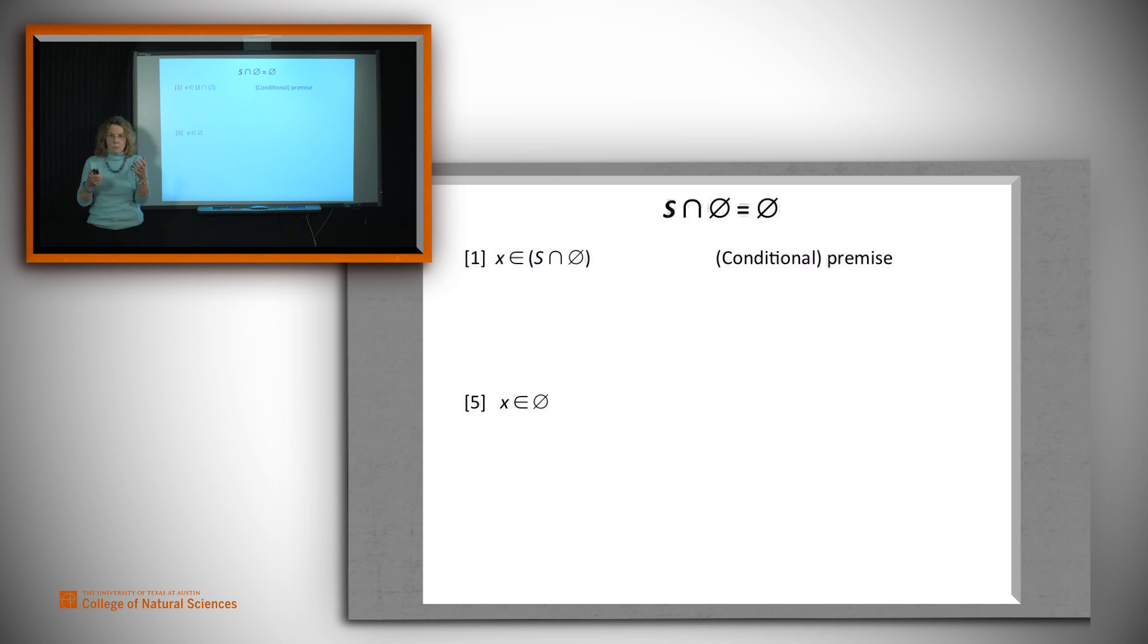All right, so this is what we've got to fill in. First, we observe that the definition of intersection tells us that if x is in the intersection of two sets, then it's in the first one, and it's also in the second one. All right, now we need to further use the definition of the empty set. And remember that the definition of the empty set is that it's equivalent to false. No element can be in the empty set. So now we rewrite this as false.